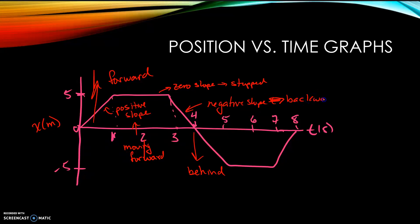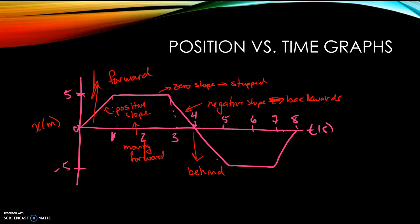So you can go through the whole graph and wherever you see a positive slope — like right here and also right here — it's moving in the forward or positive direction. Wherever you see a negative slope through this area, it's moving backwards. And where the slope is zero, the object is stopped.